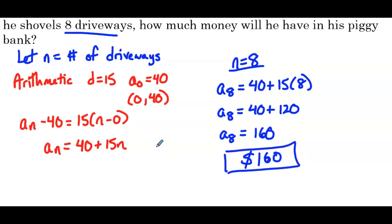The new part here was that a sub zero. Hopefully it made sense the way I described it — that he had shoveled zero driveways to get that $40.